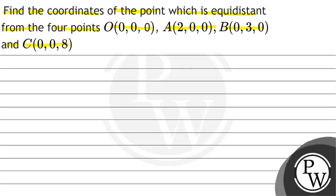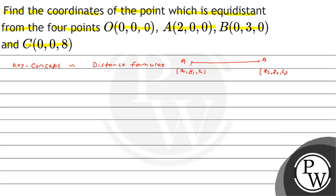The meaning of equidistant is at equal distance. The key concept we will use is the distance formula. If two points are A and B with coordinates x1, y1, z1 and x2, y2, z2, then the distance between A and B is the square root of (x2−x1)² plus (y2−y1)² plus (z2−z1)².